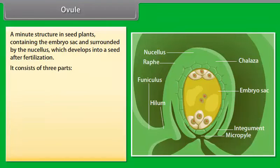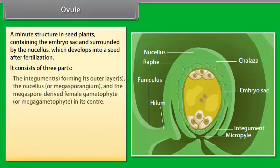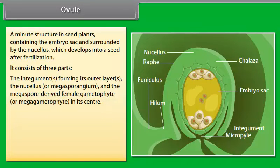It consists of three parts: the integuments forming its outer layers, the nucellus or megasporangium, and the megaspore-derived female gametophyte or megagametophyte in its center.